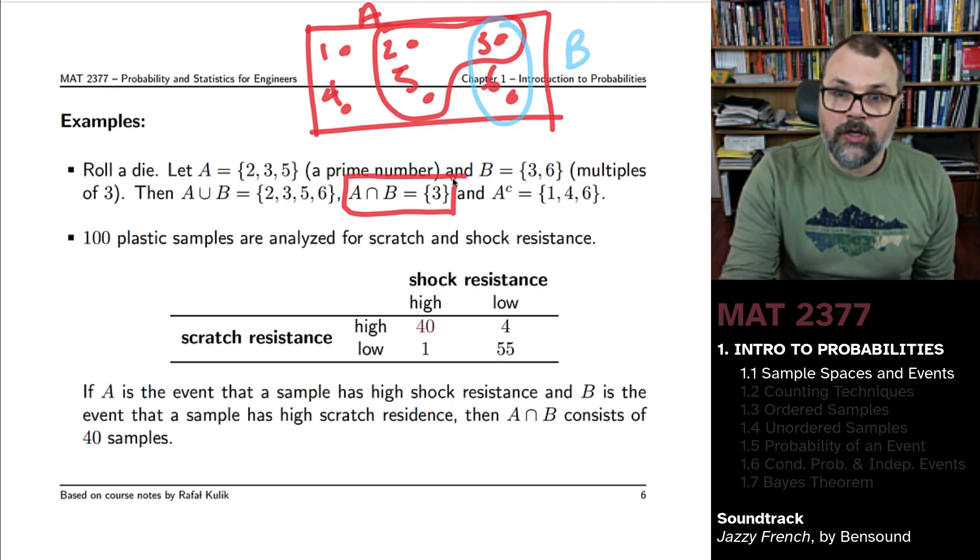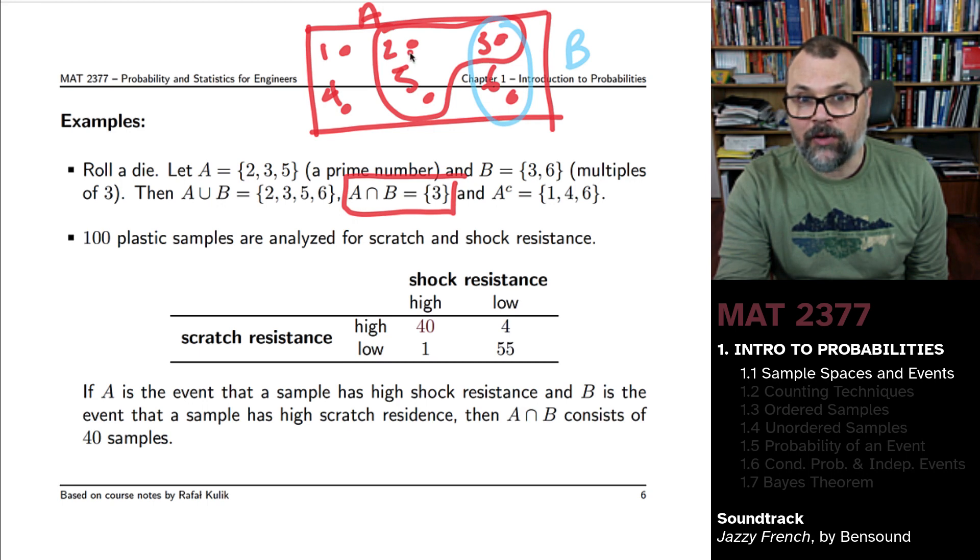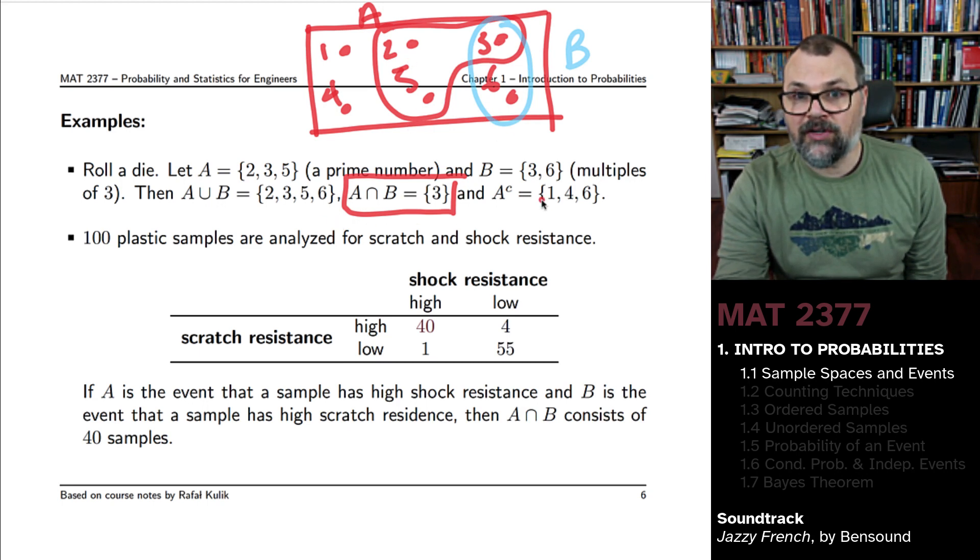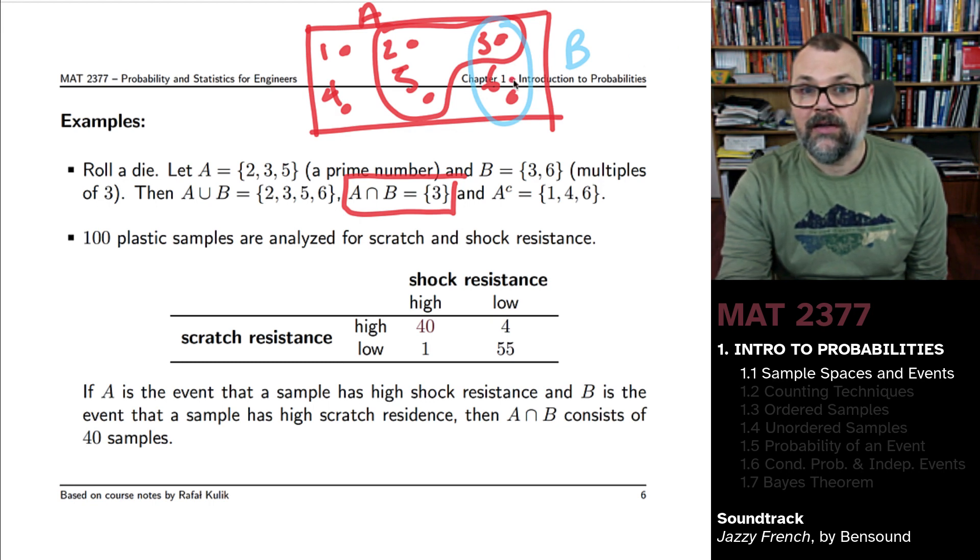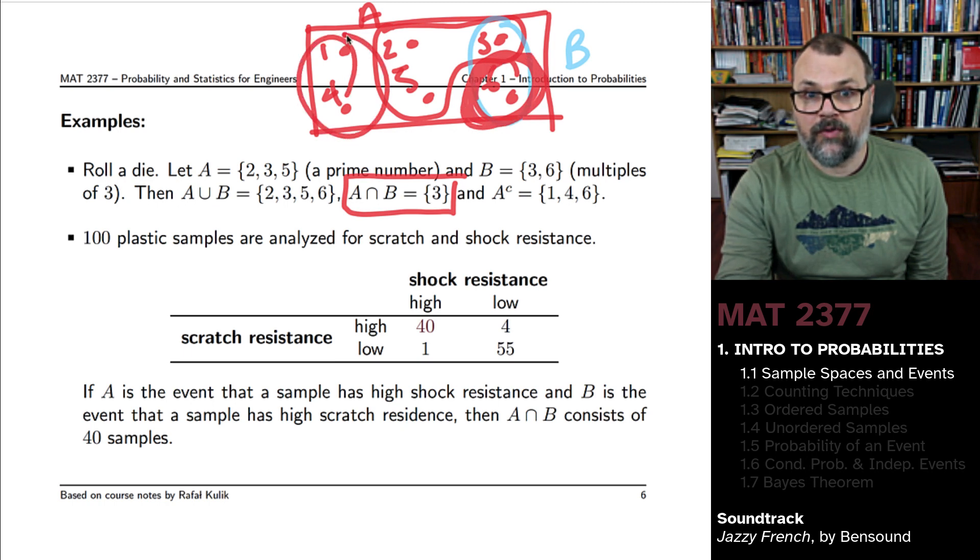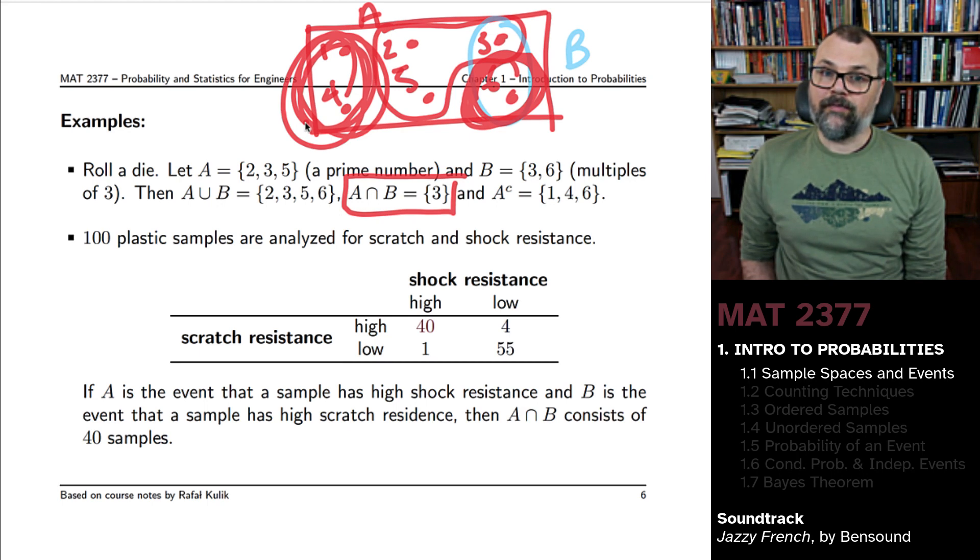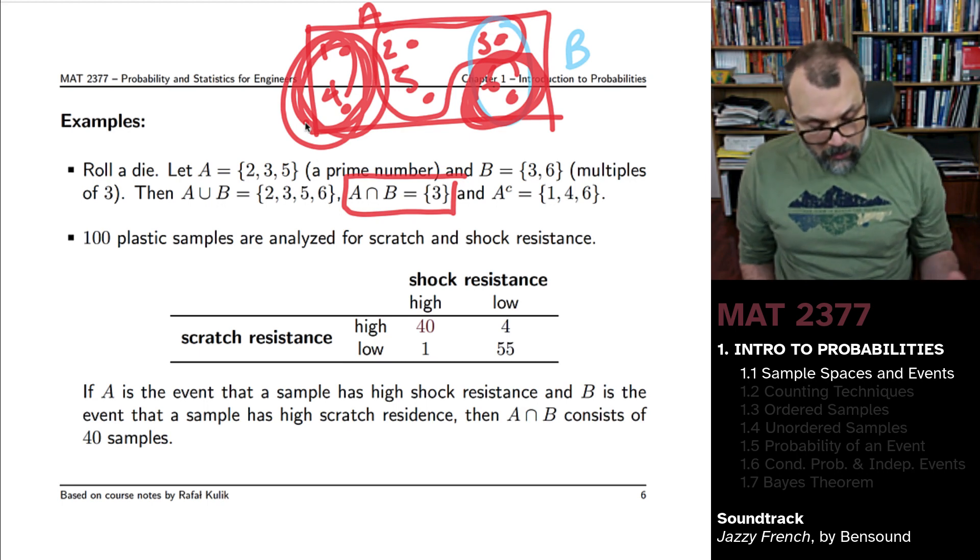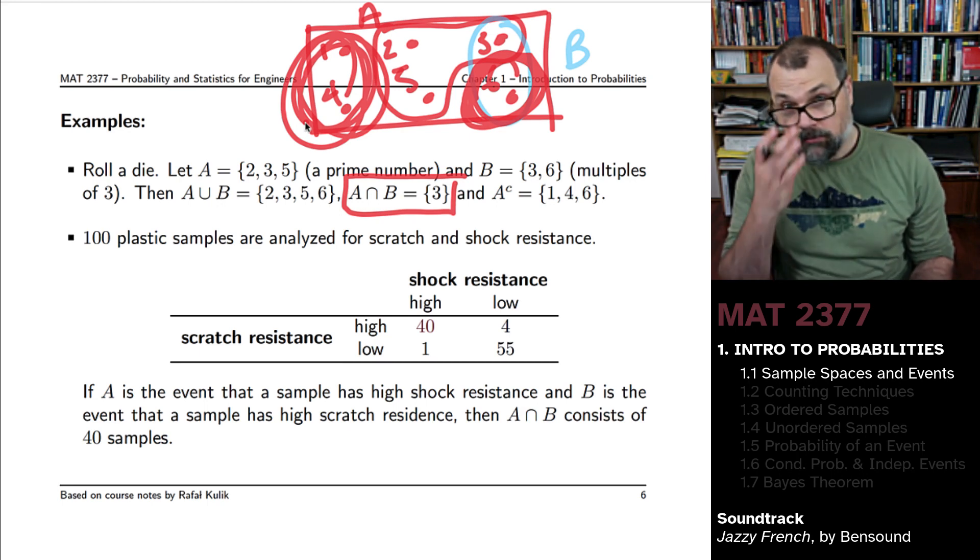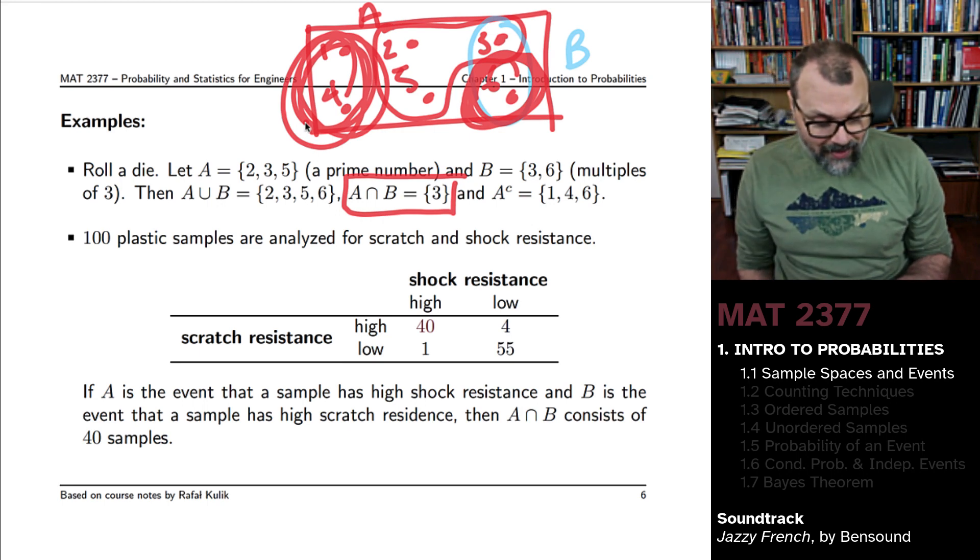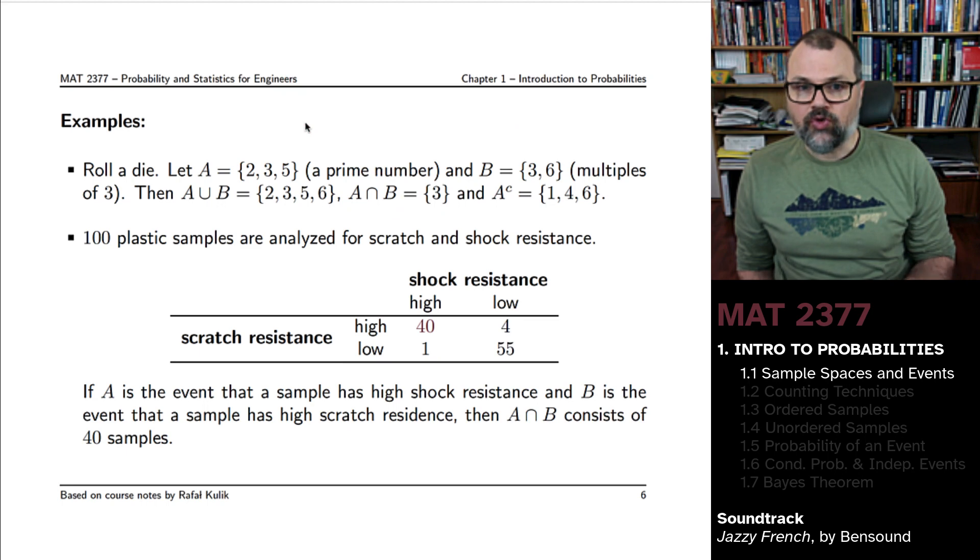Their union - well, that's the list of everything which is either A or B. So two, three, five, six. And the complement of A is everything which is not in A, which is to say six together with four and one, because everything else is in A. When you're working with discrete outcomes, discrete sample spaces, this isn't too complicated.